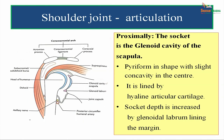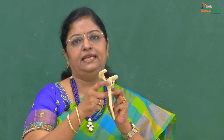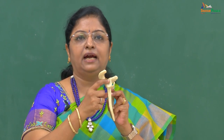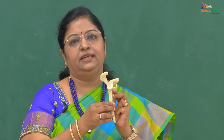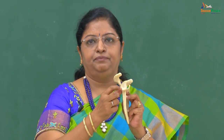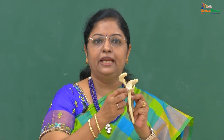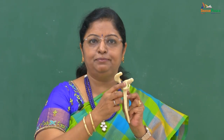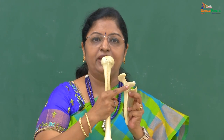Proximally, it is the socket — that is the glenoid cavity of the scapula — which is the articulating end. It is piriform or pear-shaped with a slight concavity in the centre. It is lined by hyaline articular cartilage, and this shallow socket is further deepened by the attachment of the glenoidal labrum to the margins of the glenoid cavity. The glenoidal labrum is a fibrocartilaginous ribbon attached to the margins of the glenoid fossa to increase the depth available for the head of the humerus.